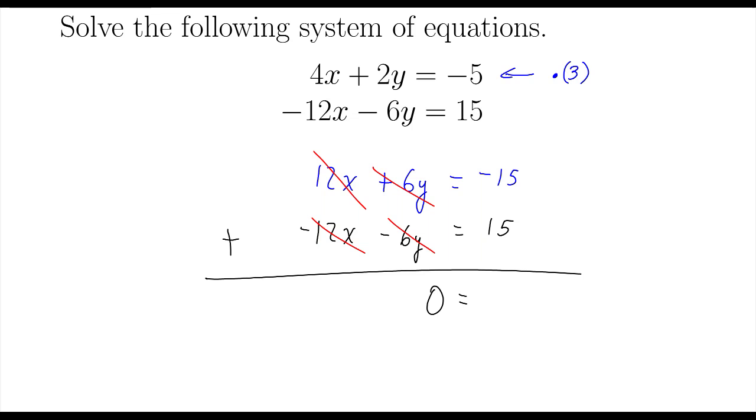Negative 15 plus 15 also cancels out. I get 0 equals 0. Now, be careful. Don't write this off as no solution, because if this were 0 equals 19 or 1 equals 3 or some kind of nonsense like that, then it would be no solution. This is very different. 0 equals 0. That is true.